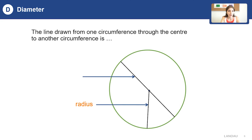Diameter: the line drawn from one circumference through the center to another circumference is a diameter. We also have to know that the diameter consists of two radiuses and the diameter cuts the circle in half.